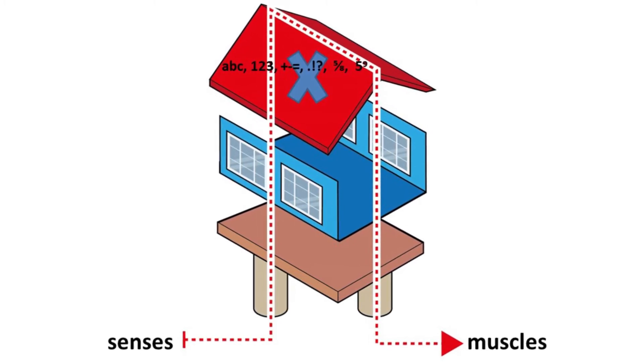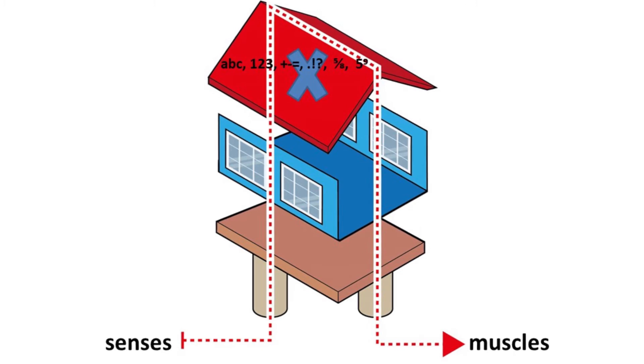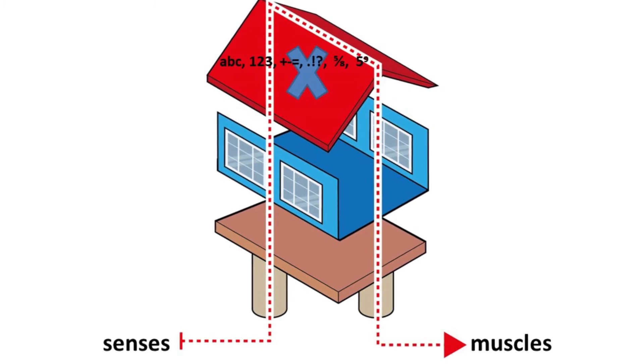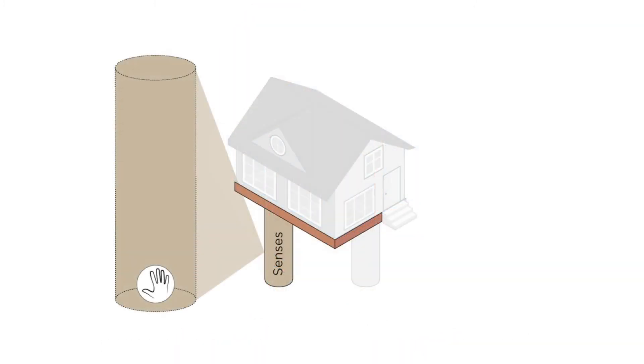So let's unpack the development of the senses. The senses develop in a very predetermined sequence. First the skin, then the vestibular system, then the nose and the mouth, the two chemical senses, then the ears, and then the eyes. The eyes are the last of the senses to develop.